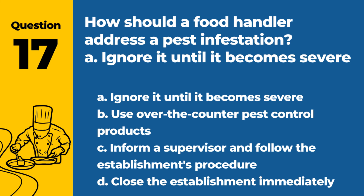Question 17. How should a food handler address a pest infestation? a. Ignore it until it becomes severe. b. Use over-the-counter pest control products. c. Inform a supervisor and follow the establishment's procedure. d. Close the establishment immediately. Answer: c. Inform a supervisor and follow the establishment's procedure. This is the correct action for addressing a pest infestation.